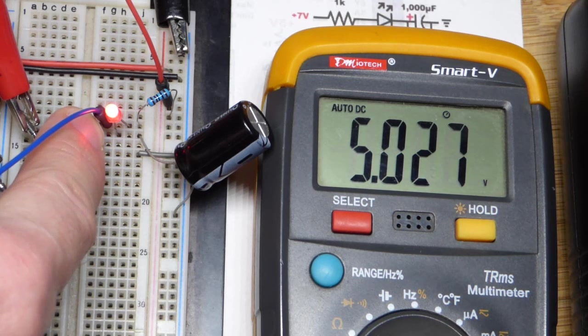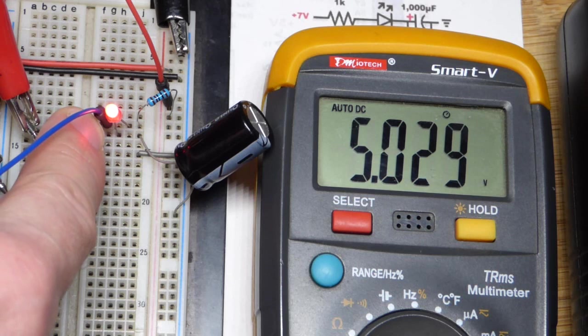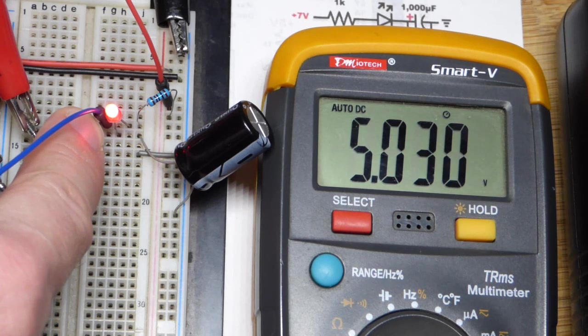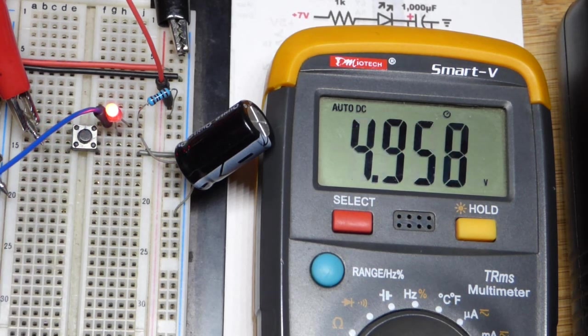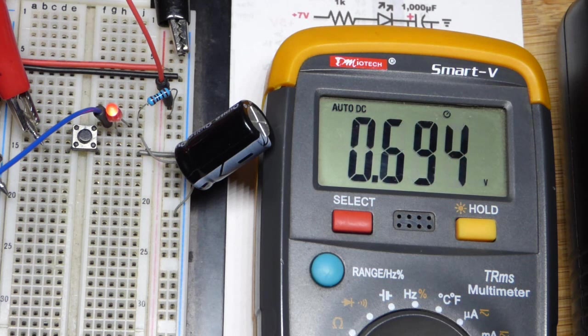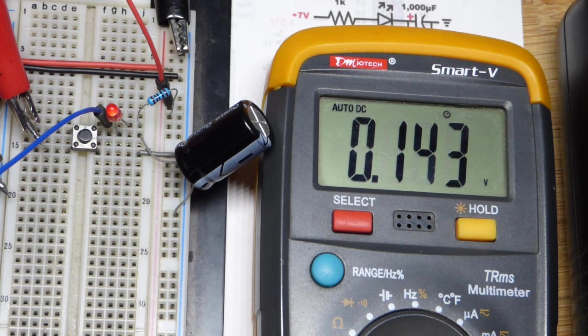So I press the button, and there you can see, we have 5 volts across the resistor. We're just measuring the resistor right now. And then I release the switch, and it's going down right there. But as we can see,